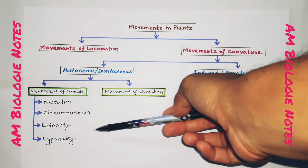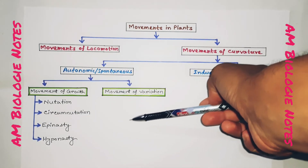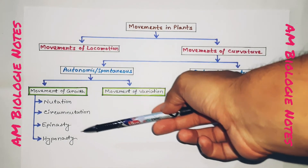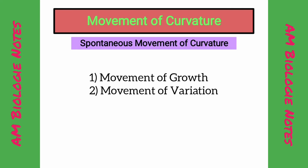In this video, I will discuss only the spontaneous movements of curvature in plants. When the movement is induced by internal stimuli, it is called autonomic or spontaneous movement. It may be movement of growth and movement of variation.